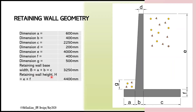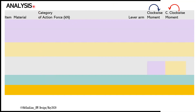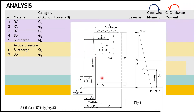The forces and moments involved in the retaining wall can be analyzed in tabular form. The table consists of information such as item, material, category of action, force, level arm, clockwise moment, and counterclockwise moment. Figure 1 illustrates 7 items or components that contribute to the analysis. Items 1 to 3 come from the reinforced concrete retaining wall, item 4 from backfill or soil, item 5 from surcharge, and items 6 and 7 from active pressures. It is needed to categorize these forces as either permanent action Gk or variable action Qk. Items contributed from surcharge are Qk; otherwise they are Gk.